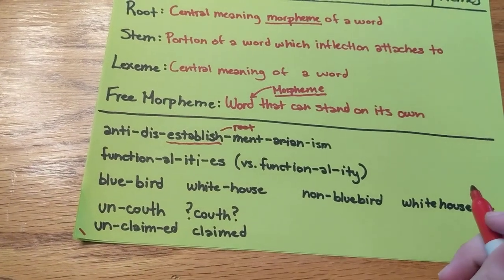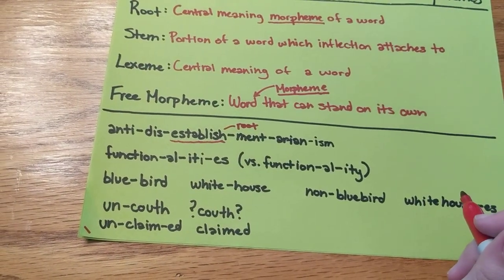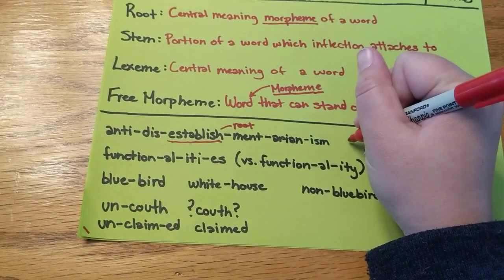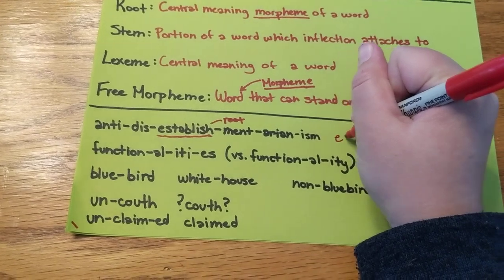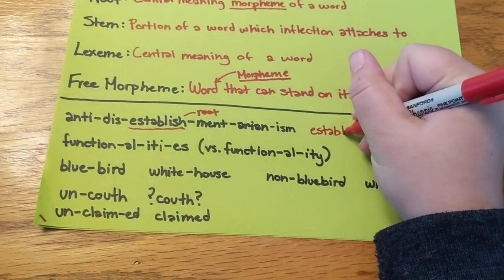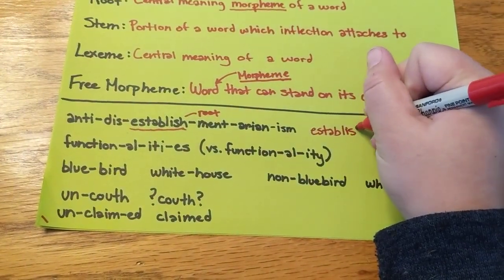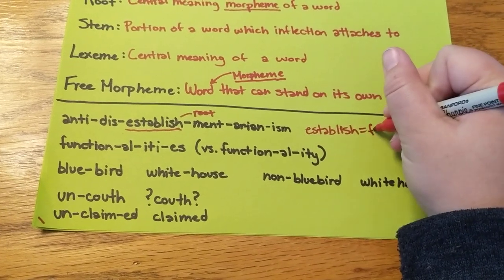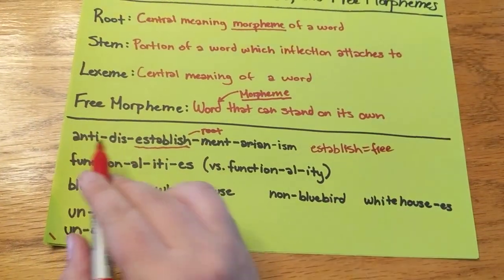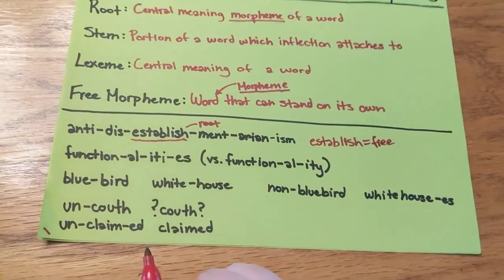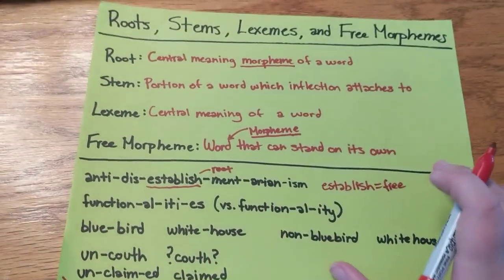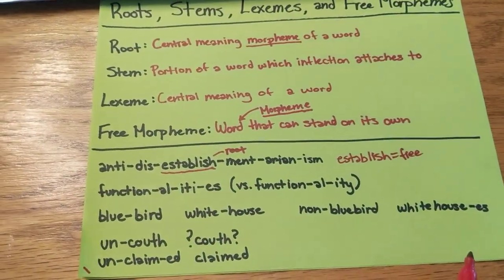Now, establish by itself can stand alone, which means it can also be a free morpheme. So establish is free, even though in this case it has affixes on it, because you can pronounce it by itself.